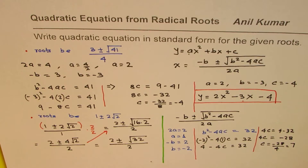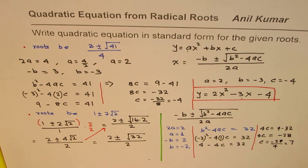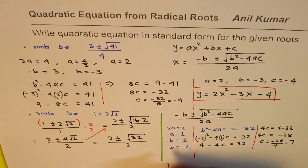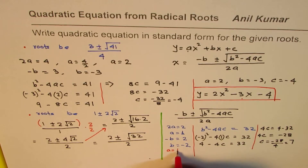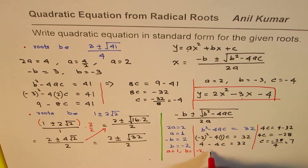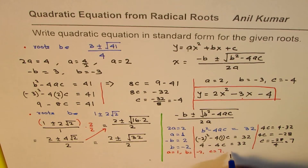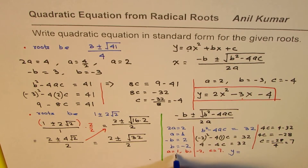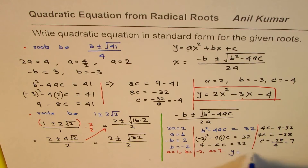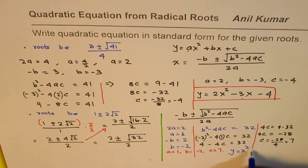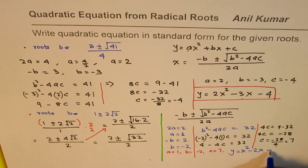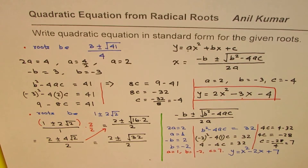So we have found: a = 1, b = −2, and c = −7. Therefore the equation is y = x² − 2x − 7.